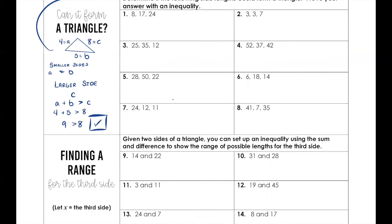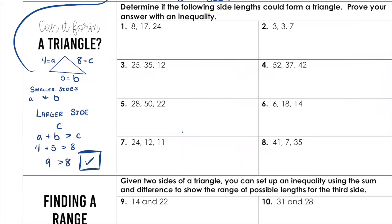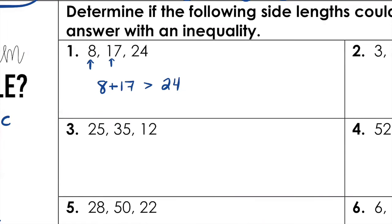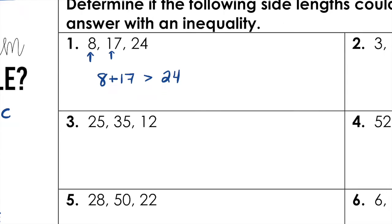Let's check some examples. The two smaller sides must be greater than the length of the third. We've got 8, 17, and 24. Our smaller side lengths are 8 and 17. So 8 plus 17 must be greater than 24. 8 plus 17 is 25. Is 25 greater than 24? Yes — so we can have a triangle.